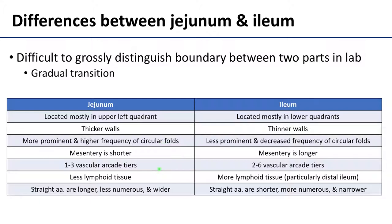The walls of the jejunum are going to be thicker and have a higher frequency of circular folds on the inside than the ileum. Both parts are going to have what's referred to as arterial arcade tiers — a beautiful arterial organization associated with the small intestine. You'll have arcades, and then straight arteries coming off the arcades heading directly to the viscera. Both arterial arcades are derived from the superior mesenteric artery, and you're going to have more tiers associated with the ileum than with the jejunum.